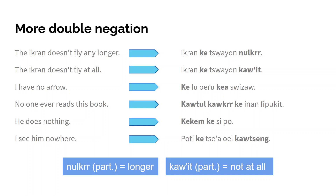'Then he does nothing' — 'kea kem ke si po.' That is interesting because we have 'kem si' meaning 'to do something,' and here we replace 'kem' from 'kem si' with 'kea kem,' the negative version, but also negate the 'si.' So 'he does nothing' is 'kea kem ke si po.' And 'I see him nowhere' is 'po dìke tswayon ke tsive'a gautzeng' — I don't see him anywhere, or essentially I don't see him nowhere.